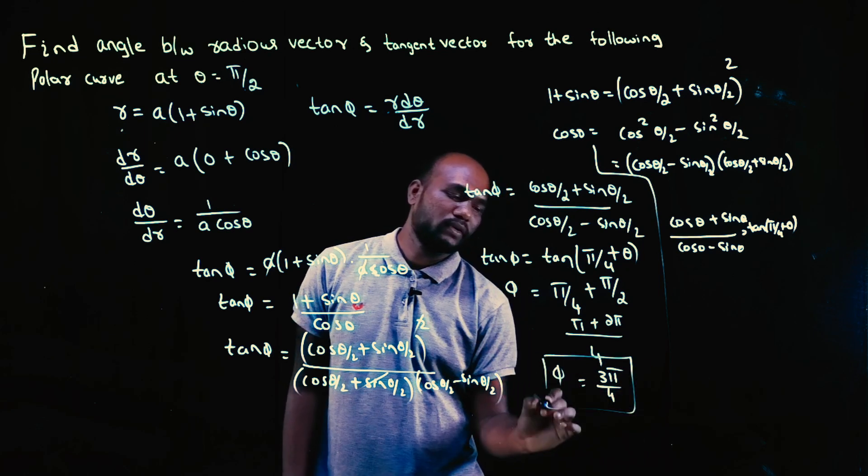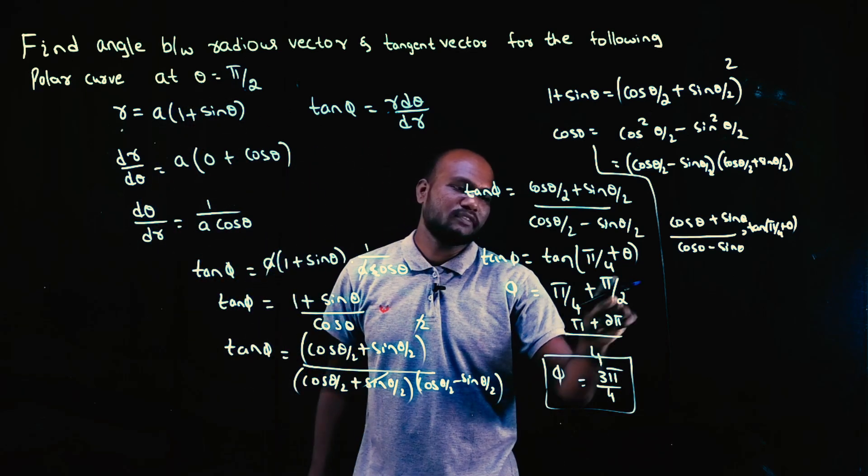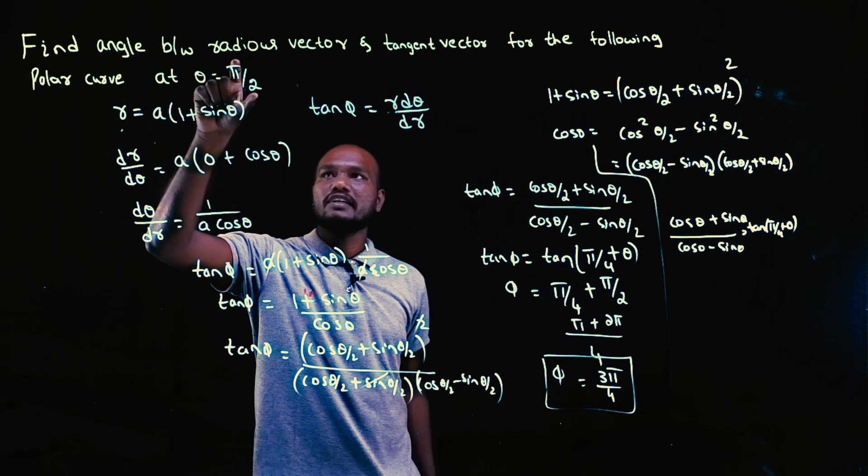The φ value is 3π/4. If theta is π/4, π/4 + π/4 is π/2. But theta value is π/2 here, so this will become 3π/4.